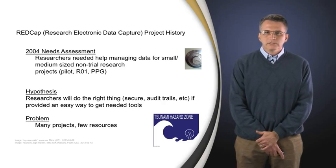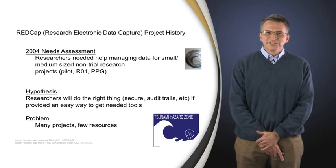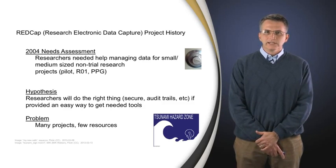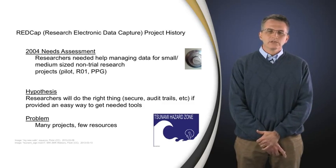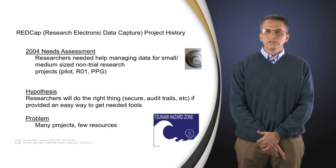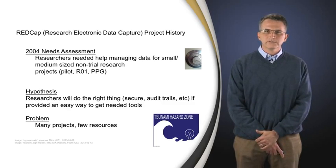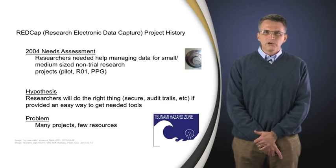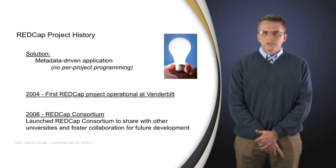So we realized that people were not doing things in a substandard way because they necessarily wanted to — they were doing them that way because they didn't have tools to do them the right way. Our hypothesis at the time was that researchers would do the right thing in terms of security, audit trails, and all of those good data management practices, if they were provided an easy way to get and to use those tools. The problem then is the same as now: we have many, many research projects at a typical academic enterprise like Vanderbilt, but few resources, and it takes a lot of resources to create custom programs. When you're creating custom programs, you typically have to go through a very long specification stage, and if things change, it becomes very costly to support and maintain custom software.